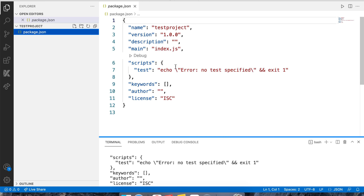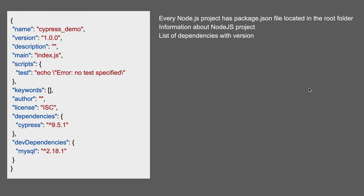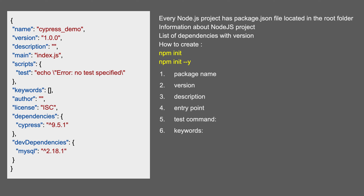In the package.json file you can see we have the name of the project, version, description, a scripts section, author, license, and so on. This file will have information about the package name, version, description, entry point, test command, keywords, author, license, git repository, and the dependencies section. Let us learn about these one by one.